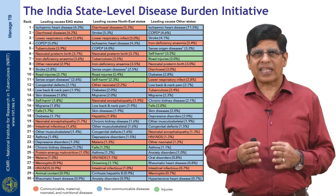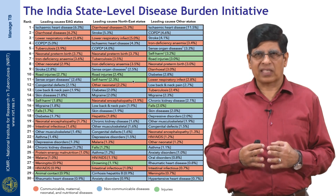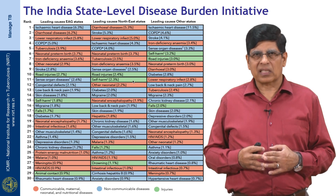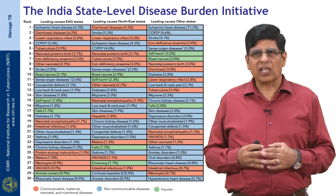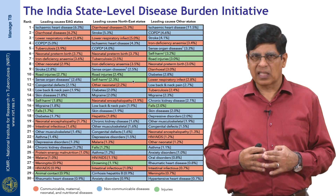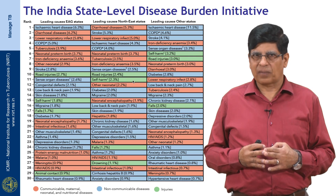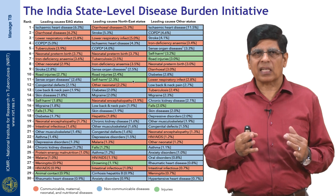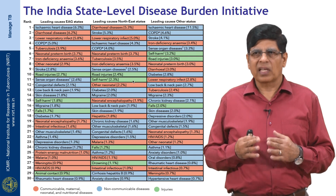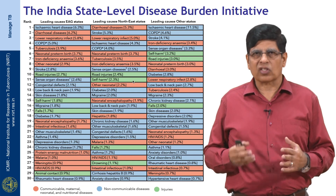The first-ever state-level disease burden estimates for every disease and risk factor in India were disseminated on 14th November this year. According to these estimates, TB is the fifth leading cause of loss of DALYs in empowered action group states, the sixth leading cause in North Eastern states, and the thirteenth leading cause in other states. DALYs — disability-adjusted life years — measure disease burden in terms of years of life lost and years lost due to disability.